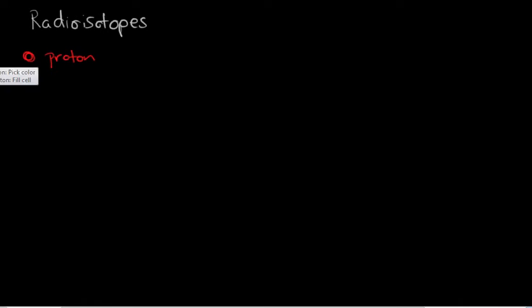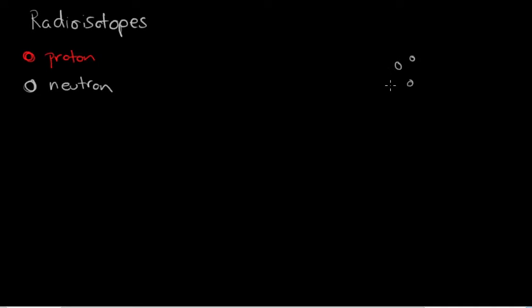For this video, a red circle represents a proton and a grey circle is a neutron, spelled N-E-U-T-R-O-N. Here is a nucleus — it could be any nucleus.